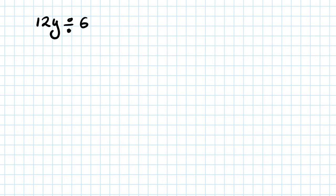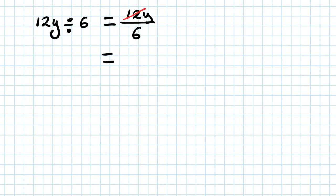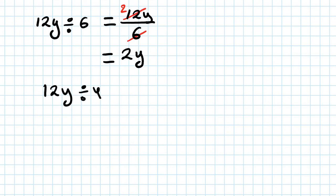For dividing, one of the easiest ways is to write it as a fraction first - that makes it easier. So for 12y divided by 6, write it as 12y over 6. Then simplify: 12 divided by 6 is 2, so the answer is 2y.